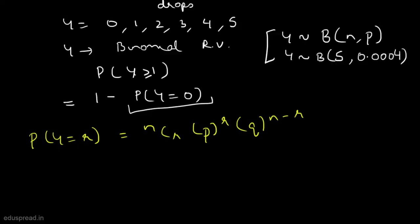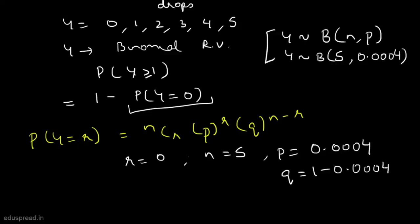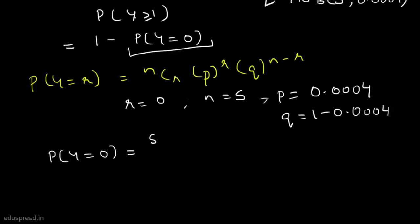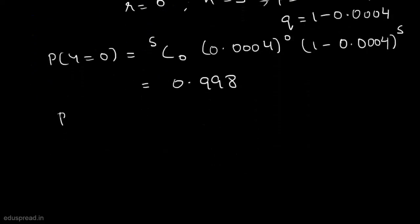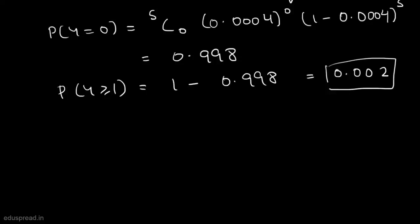In our case, r = 0, n = 5, p = 0.0004, and q = 1 minus 0.0004. So P(Y = 0) = 5C0 times (0.0004) raised to the power 0 times (1 minus 0.0004) raised to the power 5. Solving this, we get 0.998. Therefore, P(Y ≥ 1) = 1 minus 0.998 = 0.002. The probability that at least 1 parachute out of 5 will be damaged is 0.002.